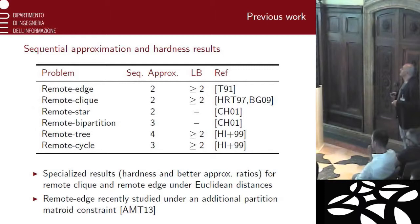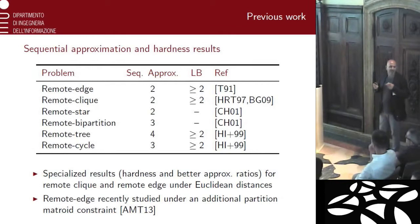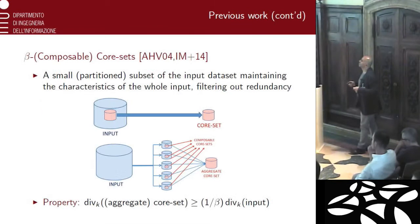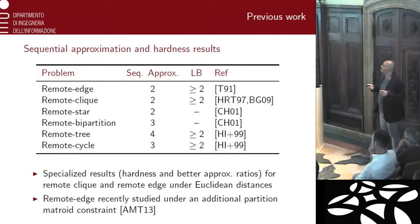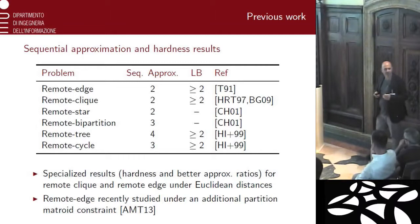Remote edge has been recently studied by people at Google, Berkeley, and others, under an additional matroid constraint — meaning that, as in the example of categories, you want to come up with a solution that not only maximizes diversity, but also the single items must come from different categories, so there are independent set constraints on the solution. All this is sequential. The problem is that most of these sequential approximations are really heavy — some are based on weighted matching — so if you have to do big data, you are in trouble because approximations based on weighted matching are going to be very expensive.